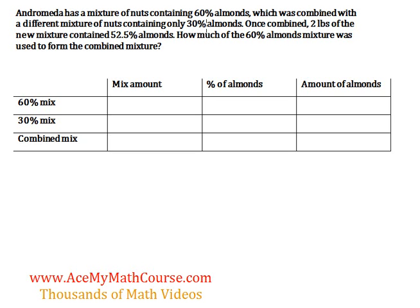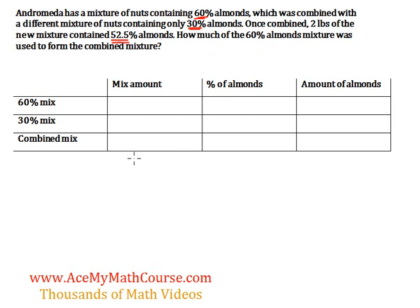Andromeda has a mixture of nuts containing 60% almonds, which was combined with a different mixture of nuts containing only 30% almonds. Once combined, 2 pounds of the new mixture contained 52.5% almonds. I prepared a handy table that will help us solve this problem.